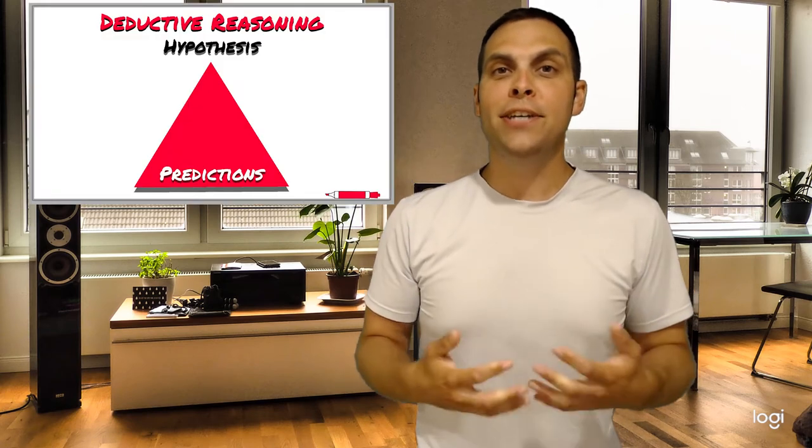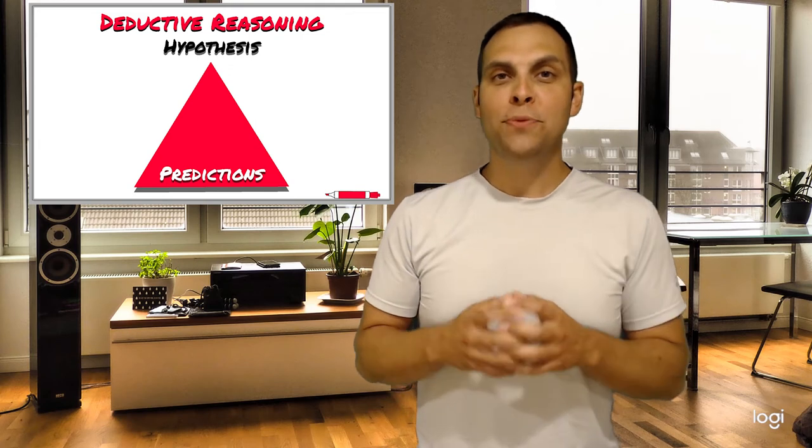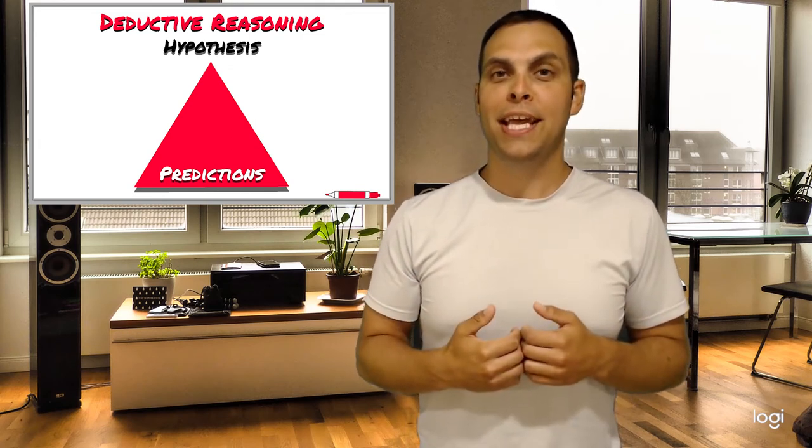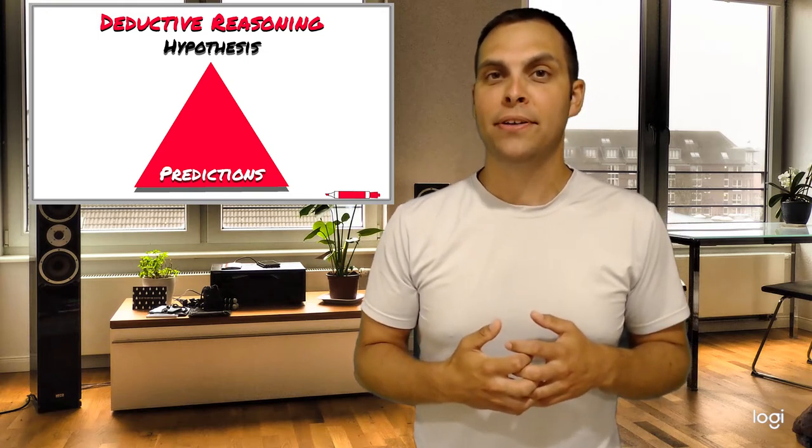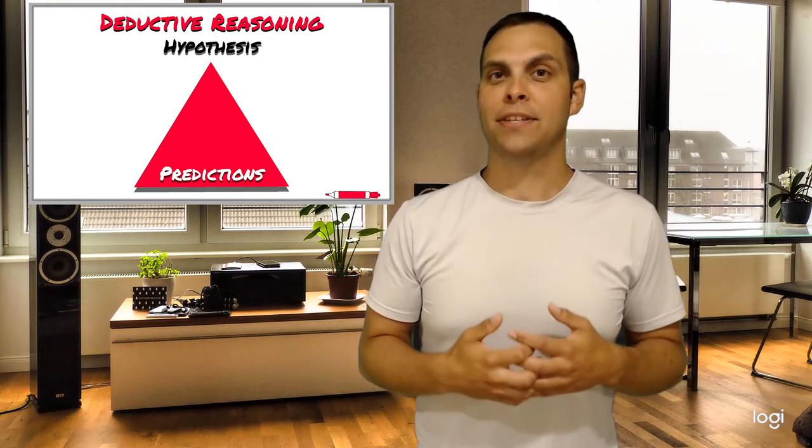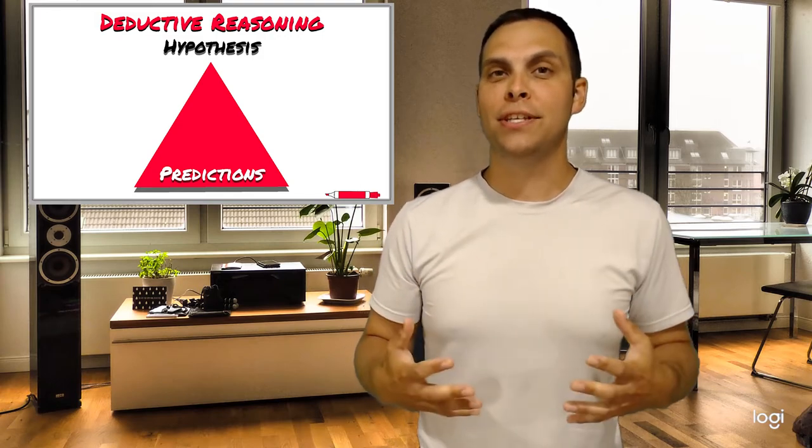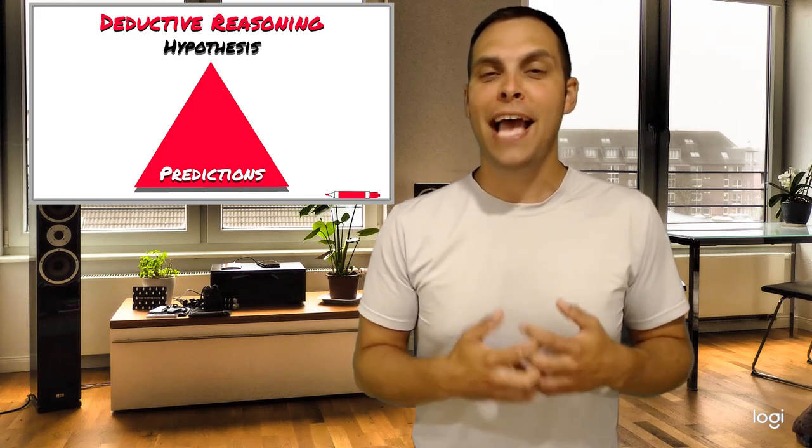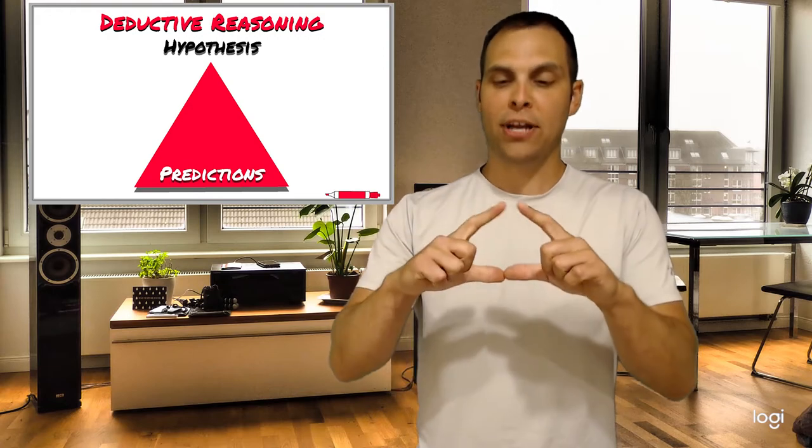So deductive reasoning is the opposite of inductive reasoning. Once we've come up with that singular premise, that hypothesis, using inductive reasoning, think of inductive reasoning as an upside down triangle. We use deductive reasoning, a triangle with the point at the top, to make predictions about what should be true if our hypothesis is accurate.